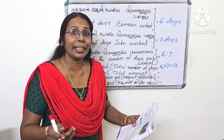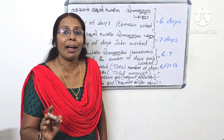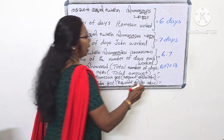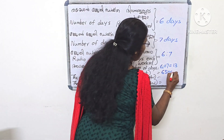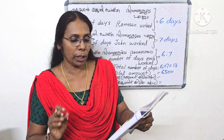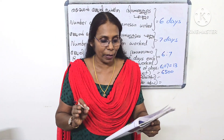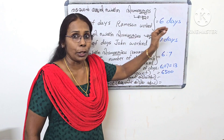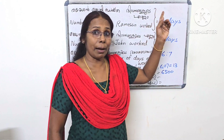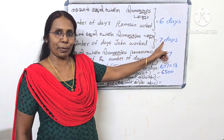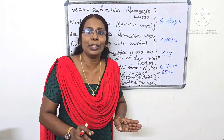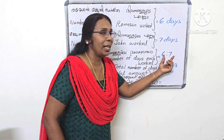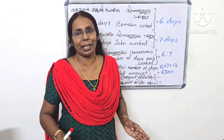The ratio is 6 to 7. The total number of parts is 6 plus 7 equals 13. So we divide 6,500 rupees in the ratio 6:7, giving 13 total parts. The answer works out to each person's respective share.